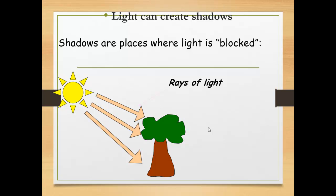We know that the light travels in a straight line. Because the light travels in a straight line, we have a shadow phenomena happening. Shadows are places where light is blocked. We can see the shadow of this tree when the sunlight falls on the tree. Behind the tree, it forms the shadow.